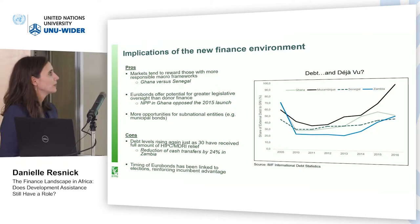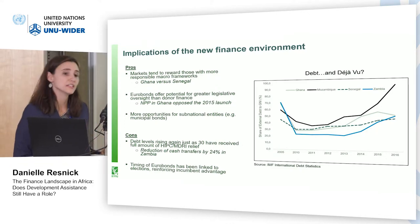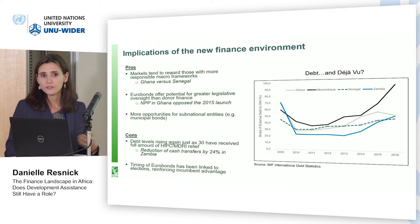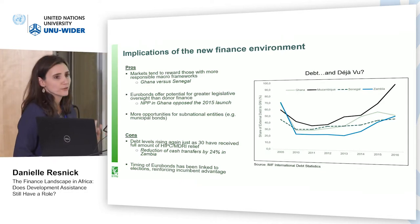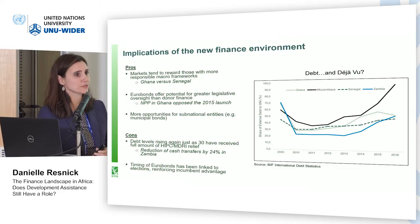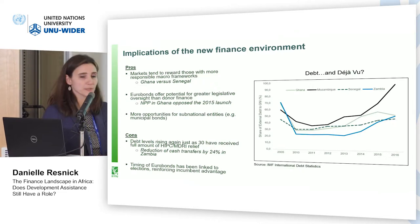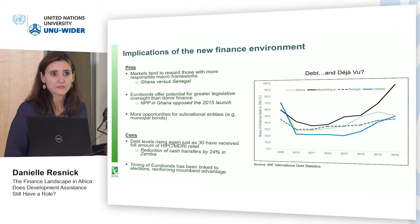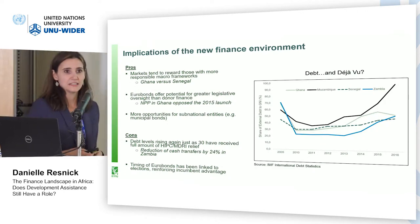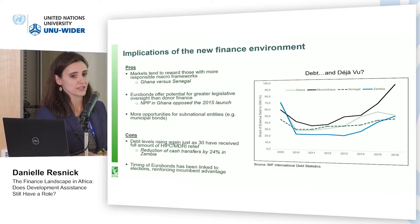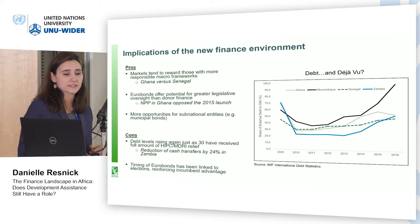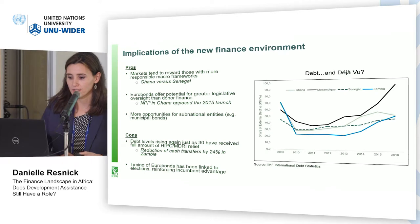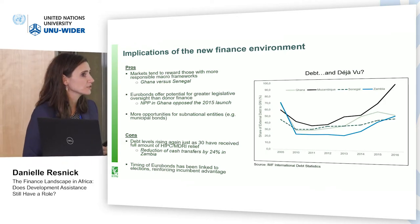We're also seeing an array of other debt instruments that are viable for subnational entities. Typically, municipal governments cannot really negotiate with donors directly for municipal financing — they're having to have their national government negotiate on their behalf. This is problematic in many countries where capital cities are governed by opposition parties, as there might be incentives for national governments not to channel financing to subnational entities. So we're seeing other types of financing such as municipal bonds launched in South Africa, Cameroon, and Senegal, giving a little more autonomy to subnational governments.